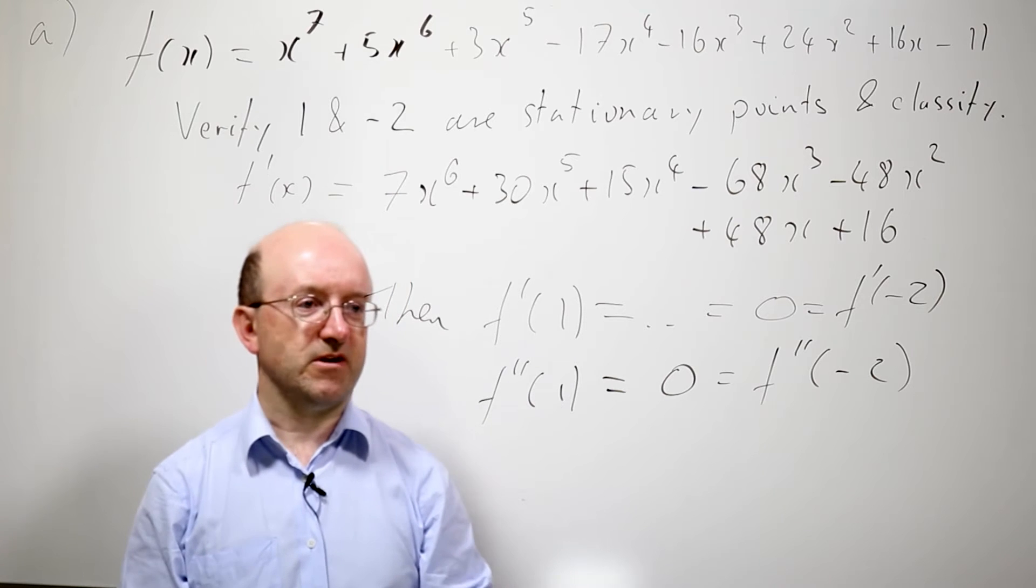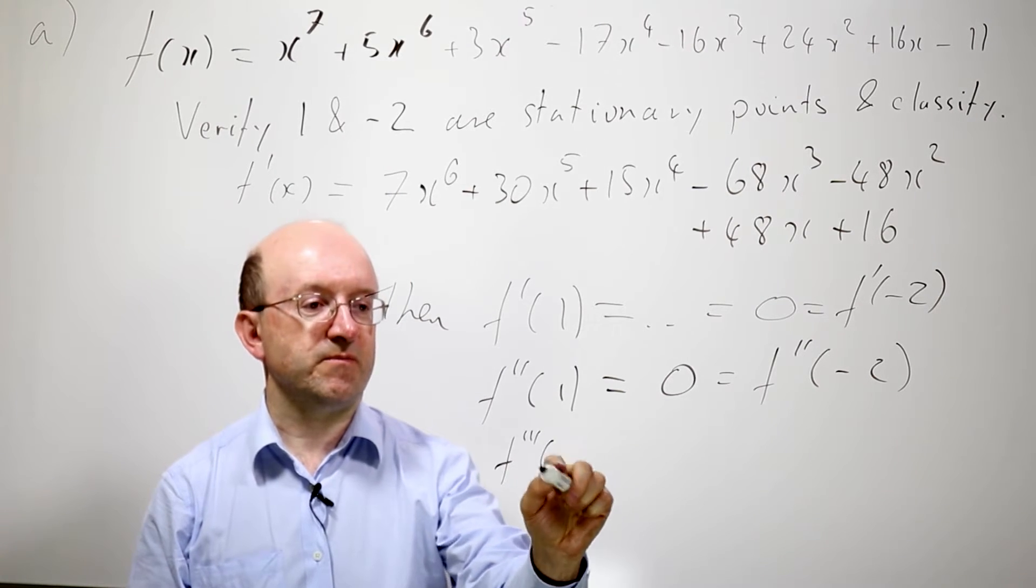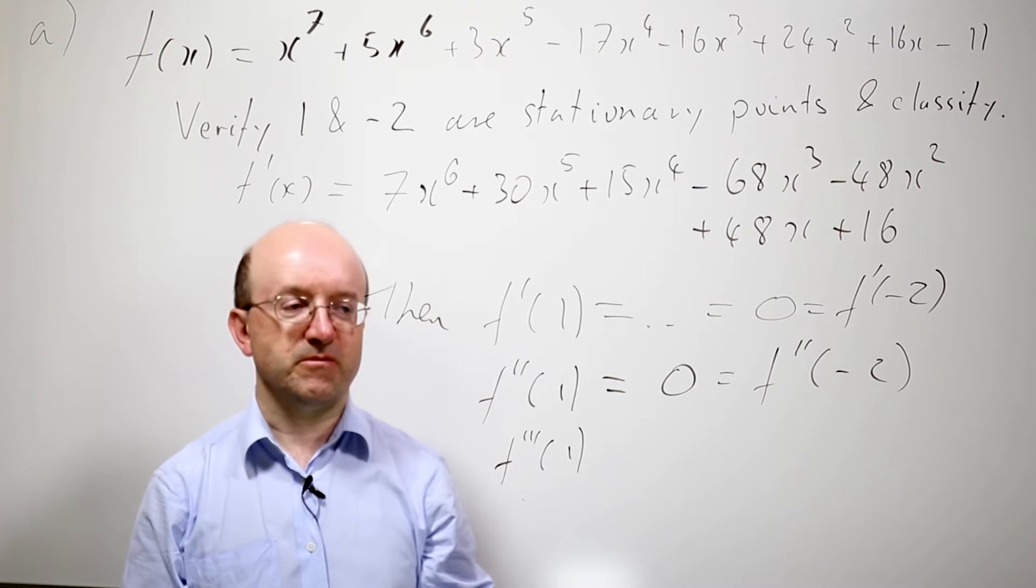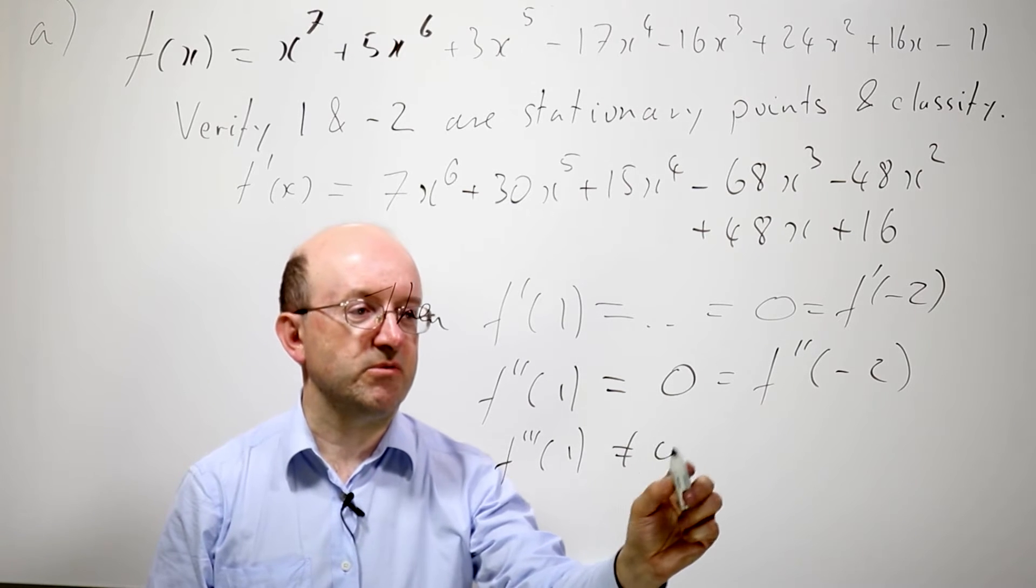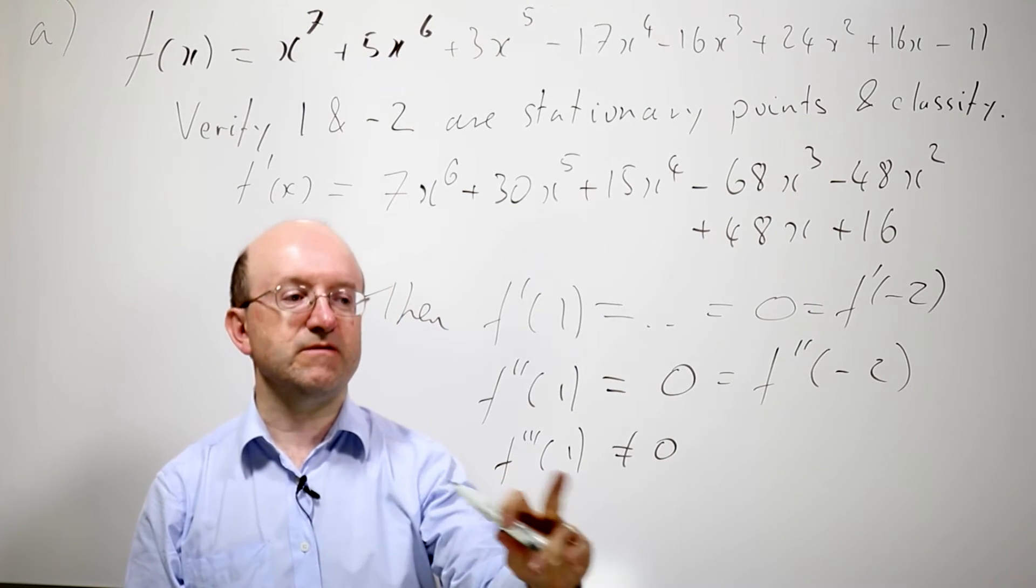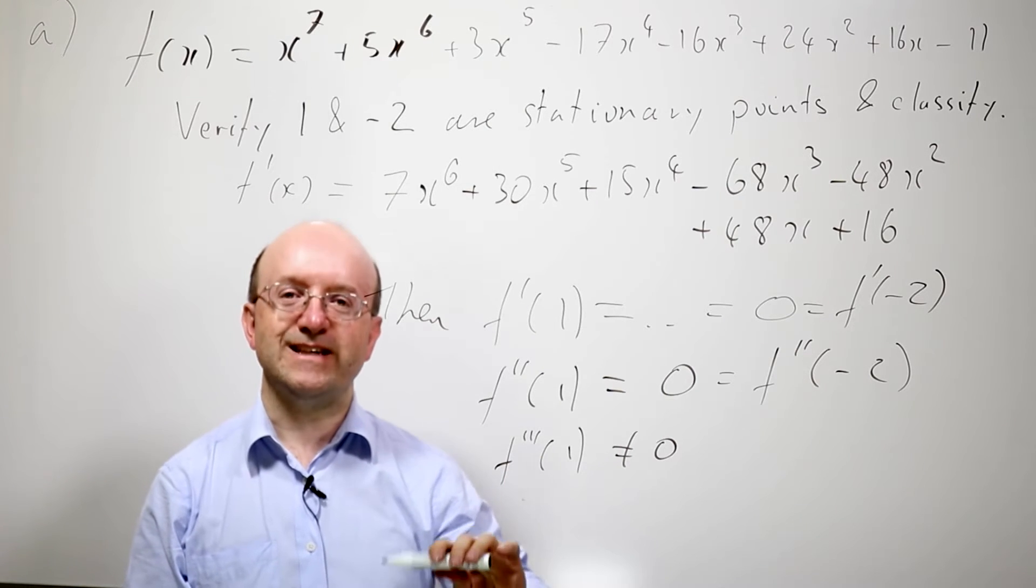We have to calculate the next derivative up. Well, we calculate the third derivative at 1, and we find that it's not 0. In fact, remember, it's a negative number. So the important point here is that it's an odd derivative, and it's not 0. Now that tells me that 1 is an inflection point.